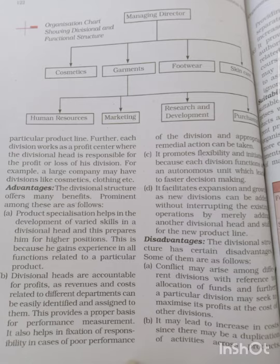So here is a clear line. When you group on a different function basis — purchase, production, finance, marketing — that is a functional structure. But if you group on a different product basis with no similarity, that is a divisional structure.